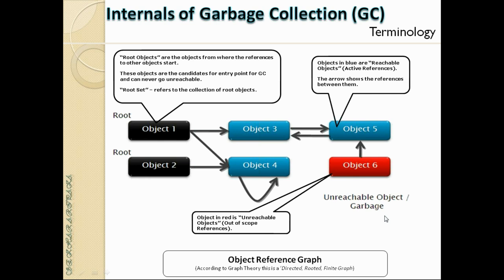The red object is called an unreachable object or a weak reference. Red objects are the targets for reclaiming by garbage collection. Importantly, although object 6 is referring to object 5, GC starts from the root objects and traces references from there. If you traverse from the root object, object 6 is never reached — so even though it references something else, it becomes a candidate for memory reclamation.